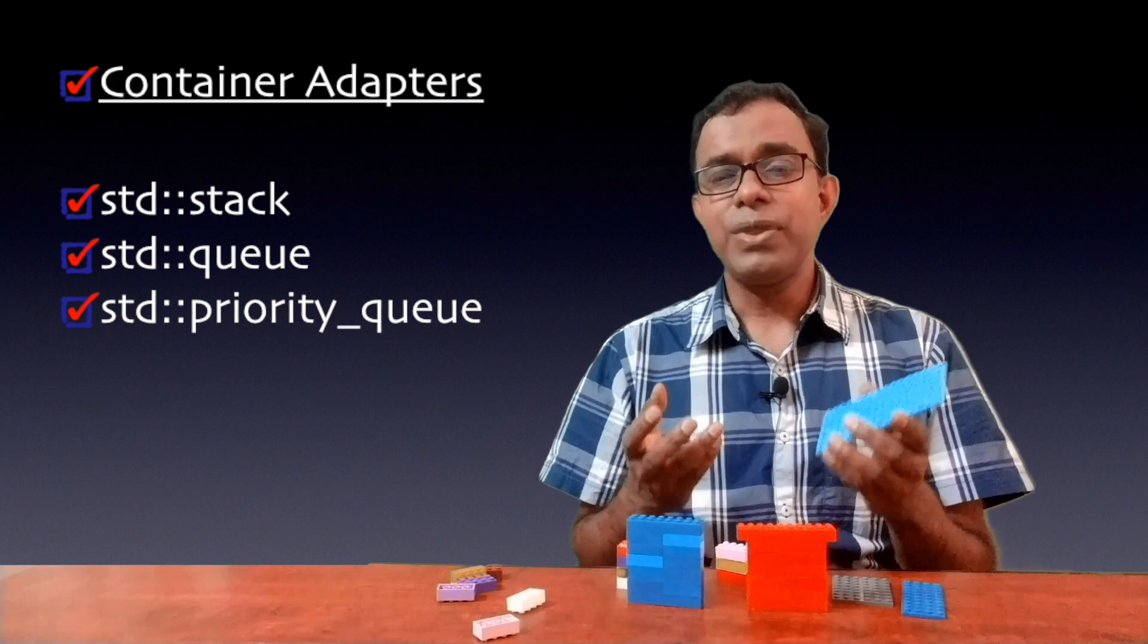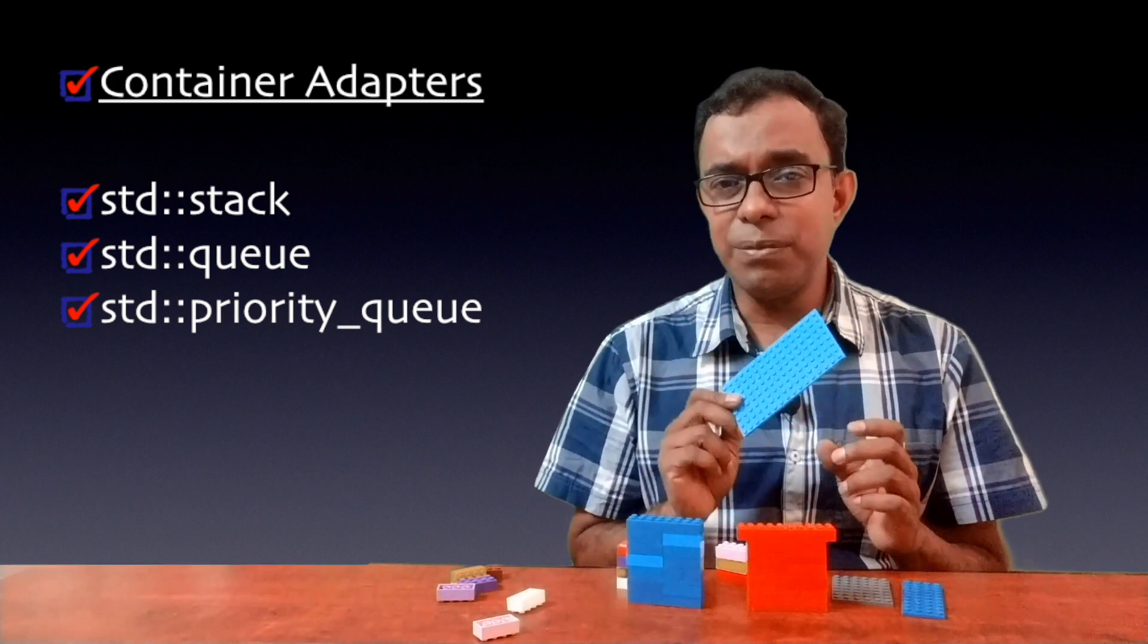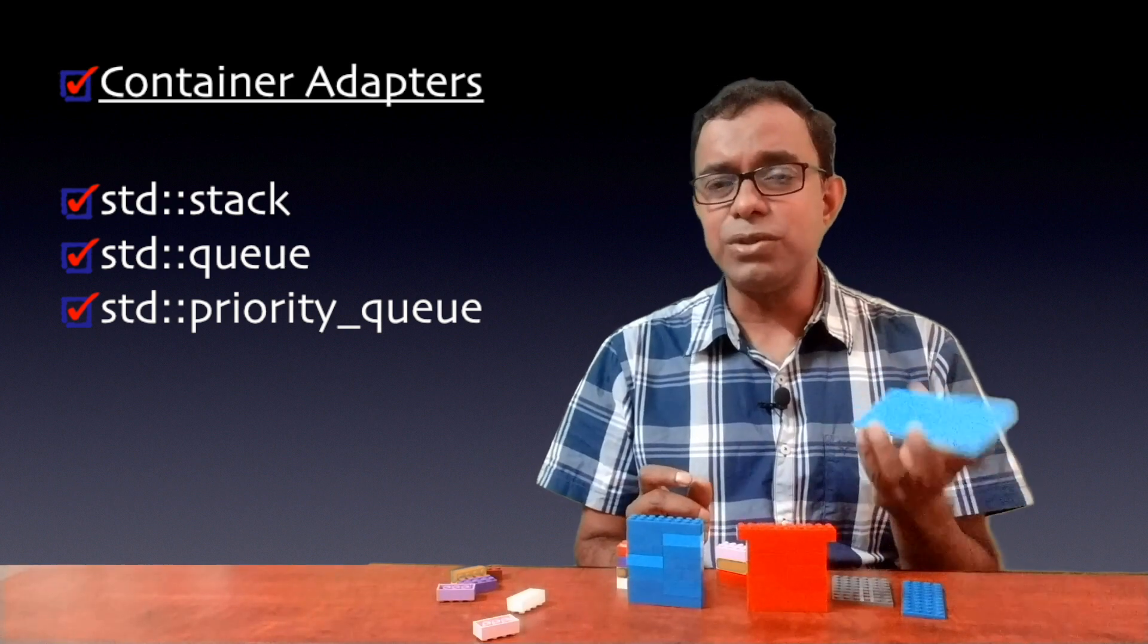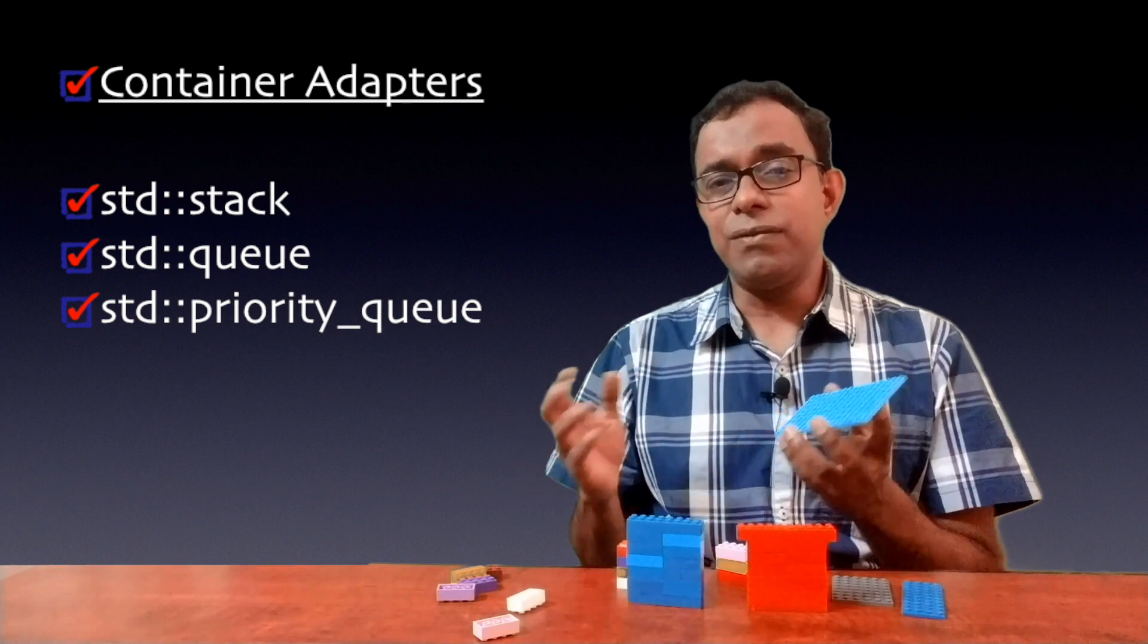It's very easy to implement stack, queue and priority queue data structure. This is well-known data structure. What does it have to do with the container? It is called container adapter because the underlying storage for stack, queues or priority queues can be changed to any other container.